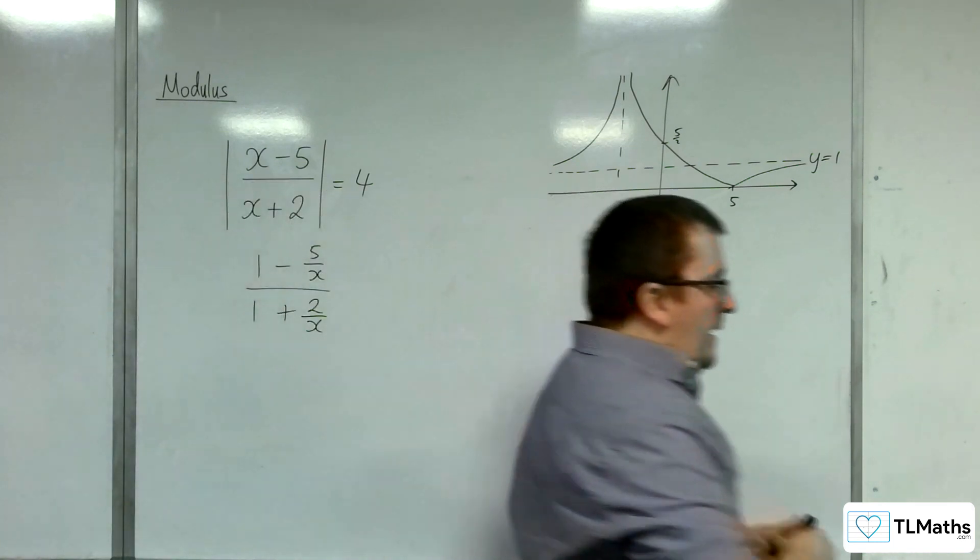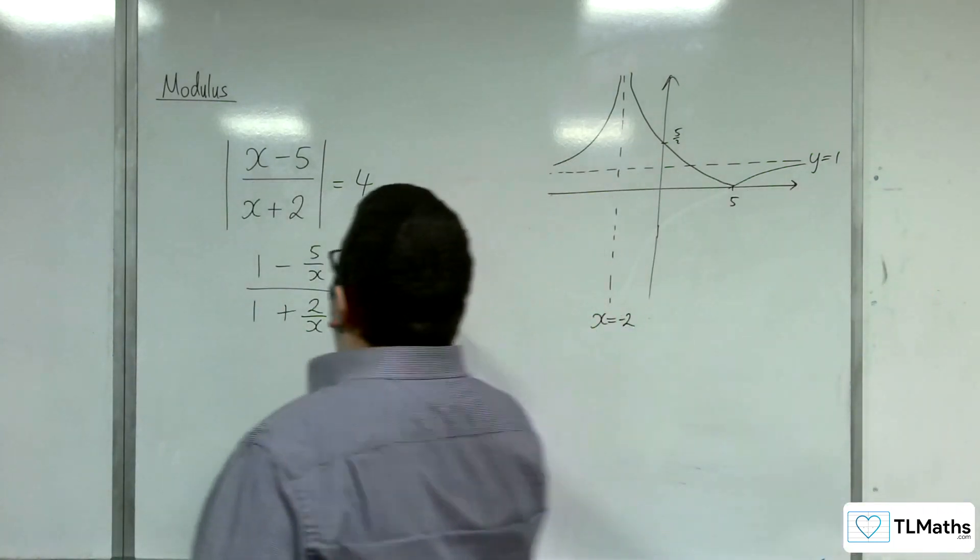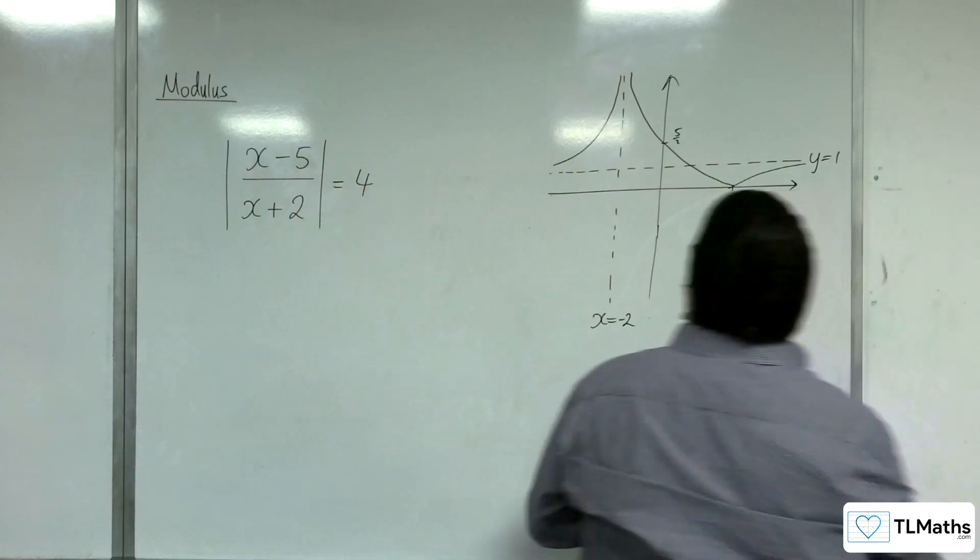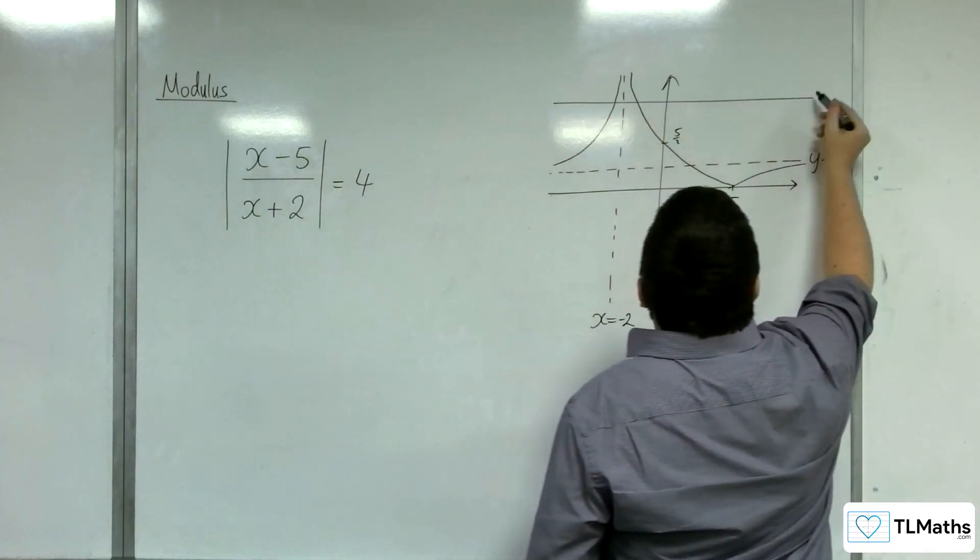If I want to find where that intersects y equals 4, well, y equals 4 is going to be a vertical line up here,